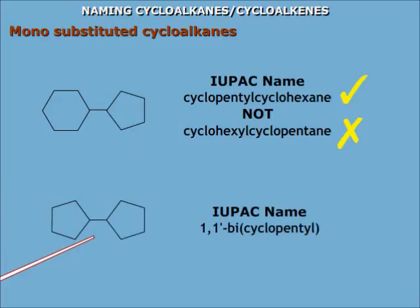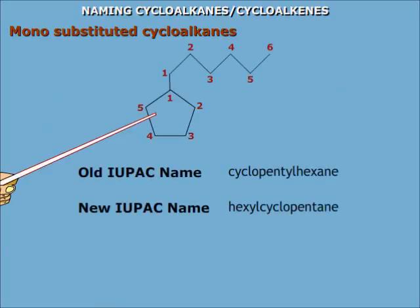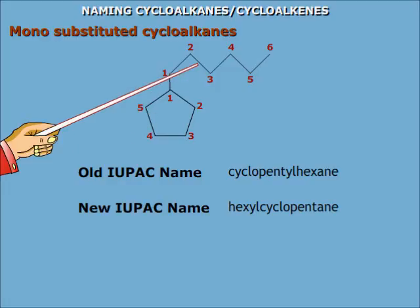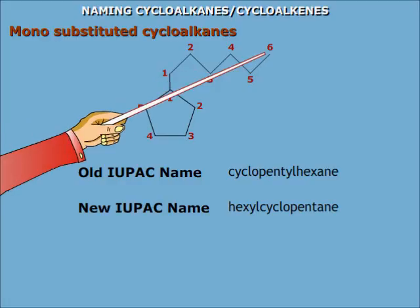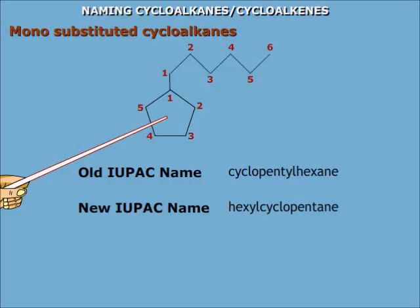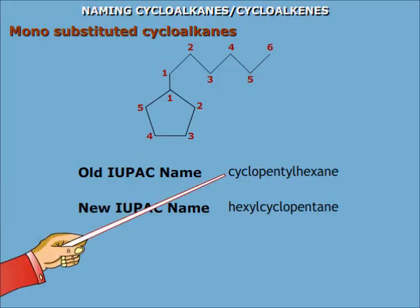When two cycloalkanes of the same size are attached to each other — for example, if two cyclopentane rings are attached — then it is called 1,1-bicyclopentyl. When a cycloalkane is attached to an acyclic substituent having a higher number of carbon atoms, then the cycloalkane becomes the substituent, so this compound is named cyclopentylhexane.